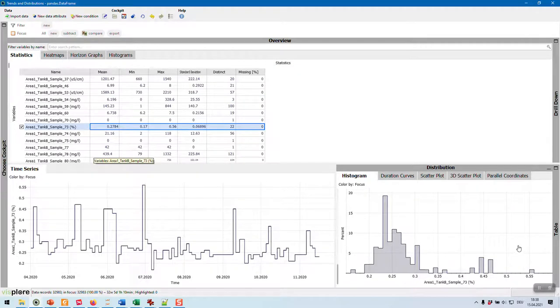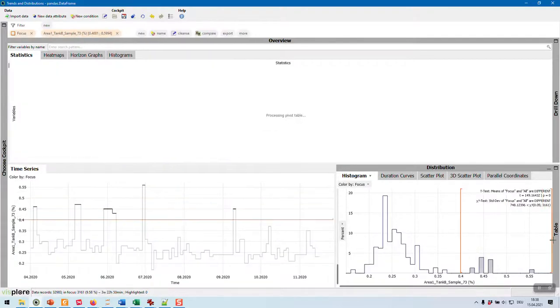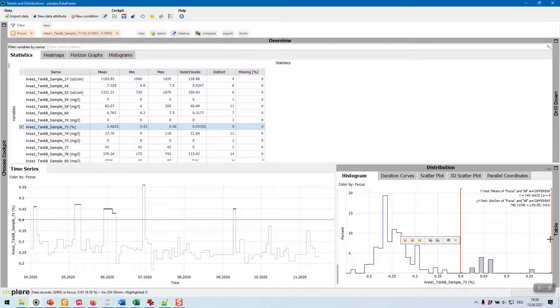I can select one and look at time series. I can have a look at the corresponding histograms. And I can use, for example, data selection to identify periods where a certain threshold might have exceeded. All other views update immediately.